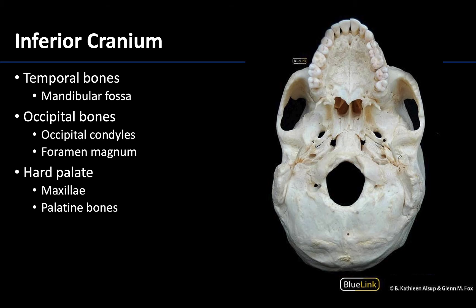Starting with the inferior cranium, we know we're looking at an inferior view because we can see the bottoms of the maxillary teeth. I always know I'm looking at an inferior view because I have a very clear foramen magnum here — a very large hole associated with the inferior view that you can't really see unless you're looking into the skull other than in this inferior view.